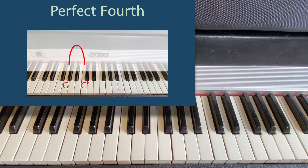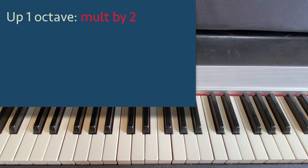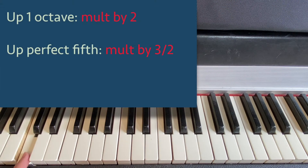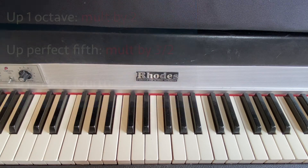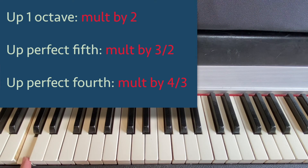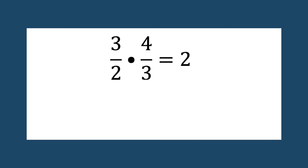The interval from G to C prime is called a perfect fourth. And with this, we can learn how multiplying a fraction by another fraction works. Recall how increasing the pitch by an octave worked: C times two is C prime. Then recall how increasing the pitch by a perfect fifth worked: C times three halves is G. And finally recall how increasing the pitch by a perfect fourth worked: G times four thirds is C prime. What this means is that starting at C, multiplying by three halves, and then multiplying by four thirds should be the same as starting at C and multiplying by two. In other words, three halves times four thirds is equal to two.